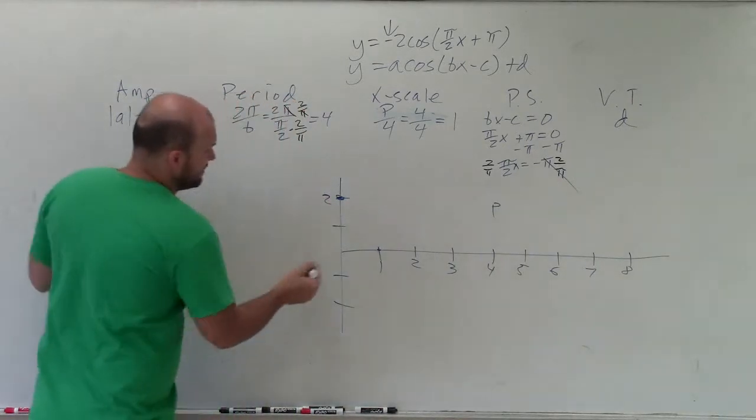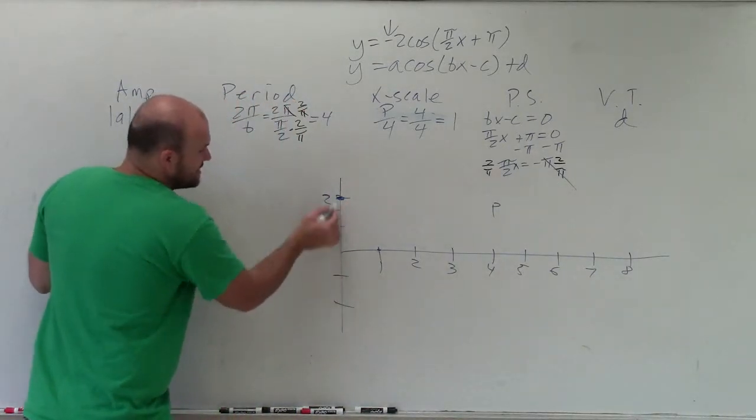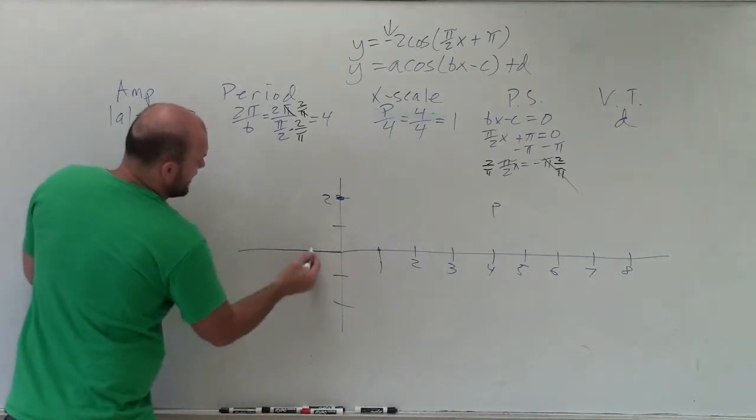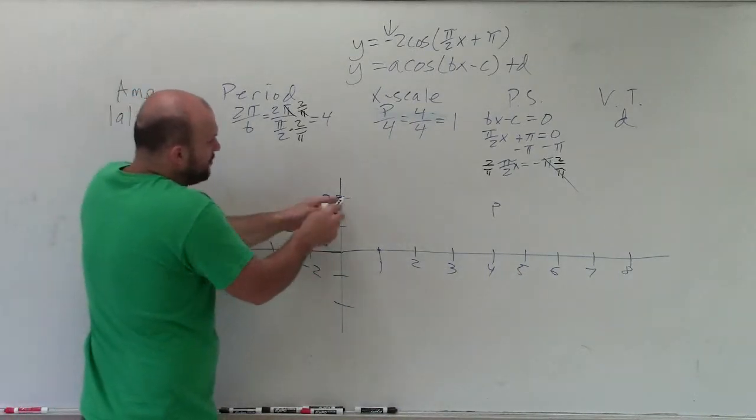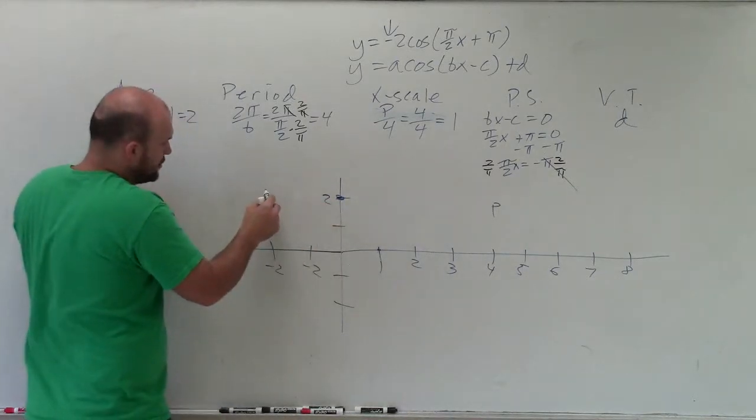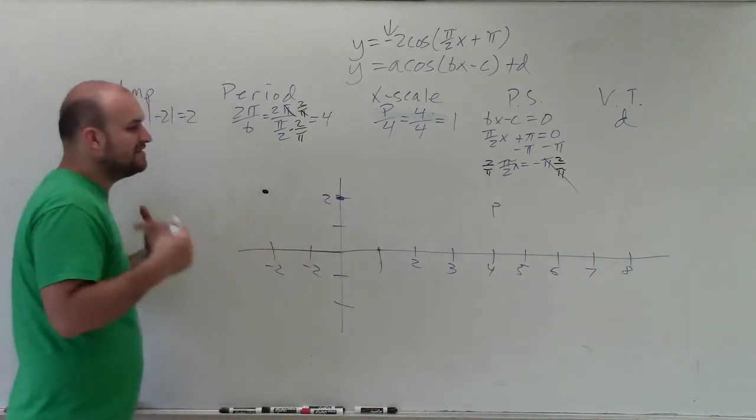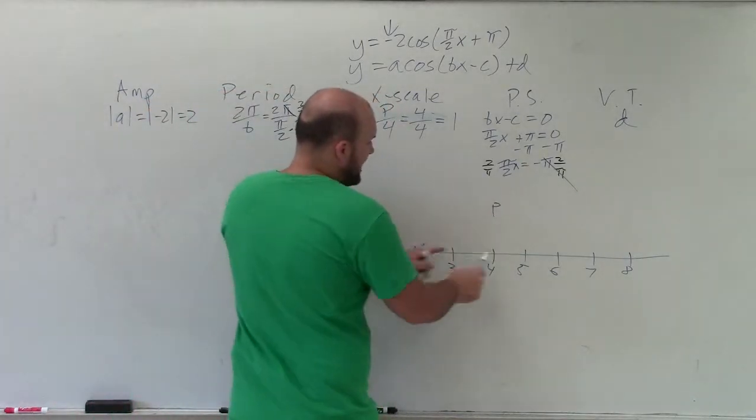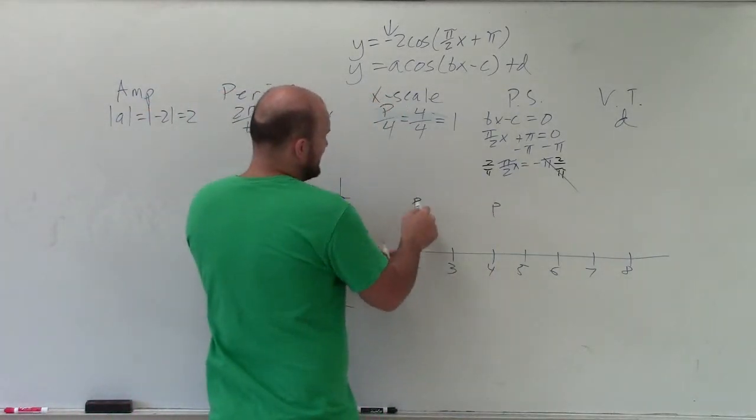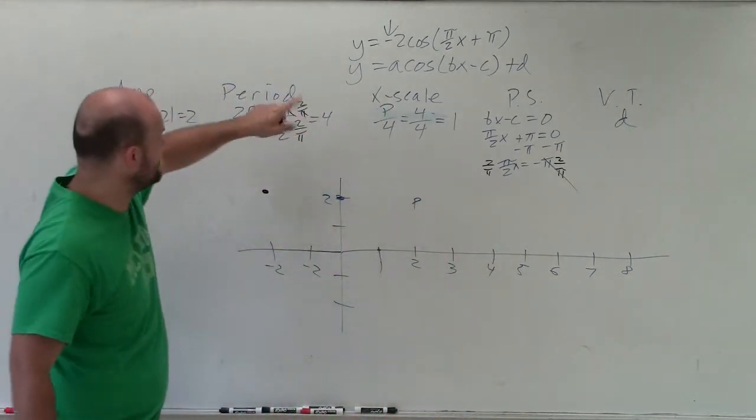And you can see I'm starting at negative 2. So actually, my graph, rather than starting at 0, 2, is actually going to start at negative 2. Or at least wherever this point was, now it's being shifted over to negative 2. However, the x scale and the period all remain the same. So instead of my period ending at 4, my period is now going to end at 2. And let's see if that's the case. Is there any other transformations? Oh yeah, we have a reflection.